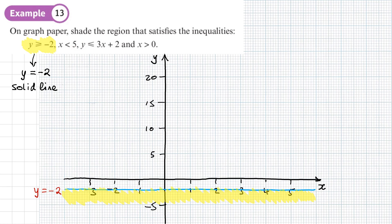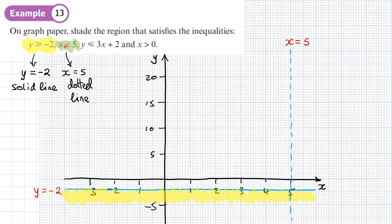The next inequality is x < 5. This is going to be a dotted line — we draw the boundary x = 5 as a dotted line because it's less than five, not less than or equal to. The inequality says x is less than five, which is the area to the left of the line. I'm shading the bit I don't want — the area to the right — and there's the shaded-off region.